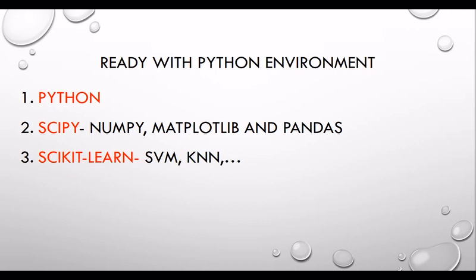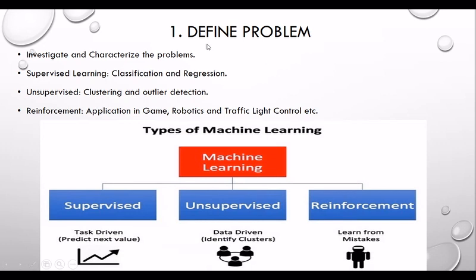Step one is to define the problem. When you start any kind of project, you have to be clear about what kind of work you are going to do. According to the types of machine learning, the task can be divided into three parts: supervised, unsupervised, and reinforcement learning. For example, classification and regression belong to supervised machine learning, and clustering belongs to unsupervised.